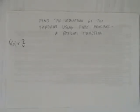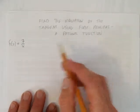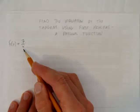In this video, we'll look at how to find the equation of the tangent using first principles when the equation given to us is a rational function, and this function is 7 over x.